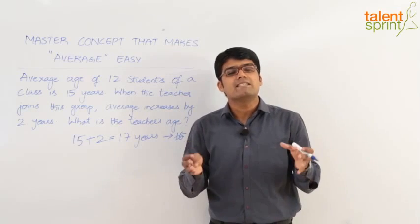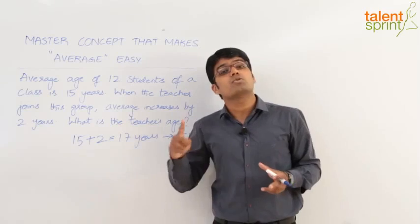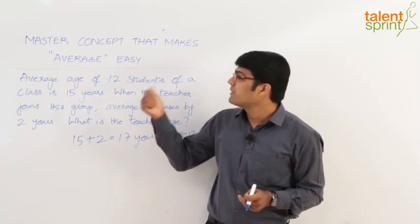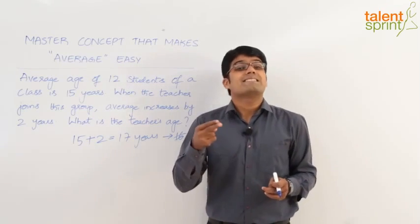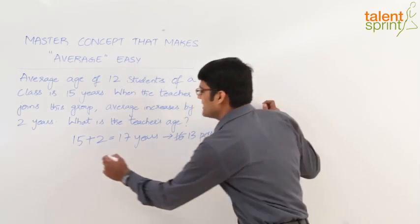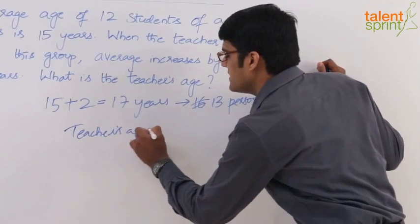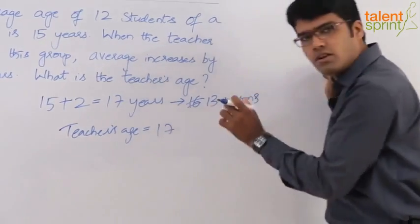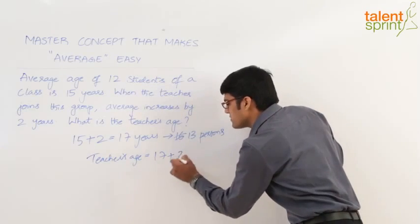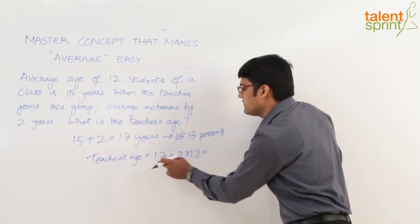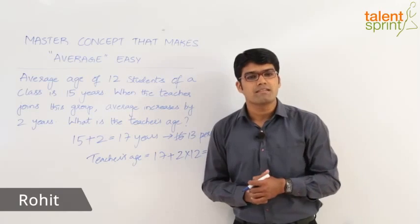So we can simply say that the teacher's age is 17 years which the teacher already has, plus 2 years given to all the 12 students. So 2 into 12 is 24. 24 plus 17 will be the teacher's age. So the teacher's age here is equal to 17 plus 2 into 12. 2 into 12 is 24. 24 plus 17 is 41. So we can say teacher's age here is 41 years.